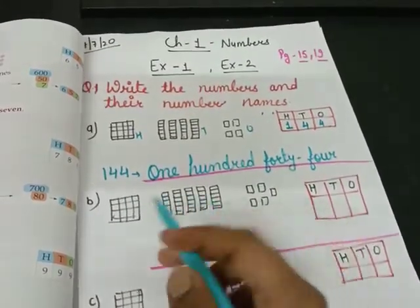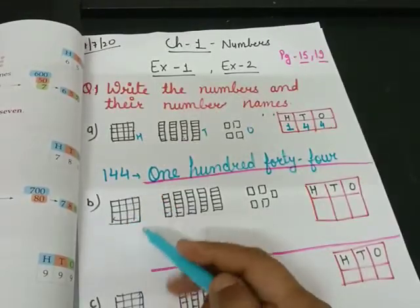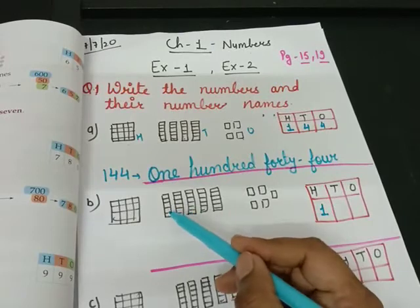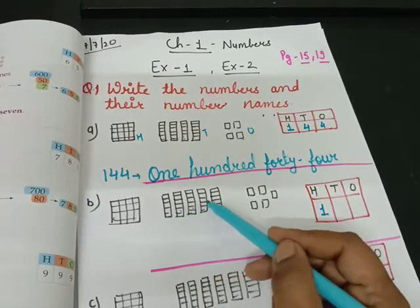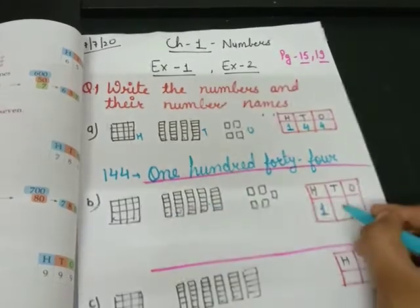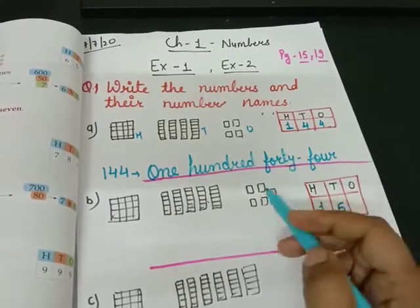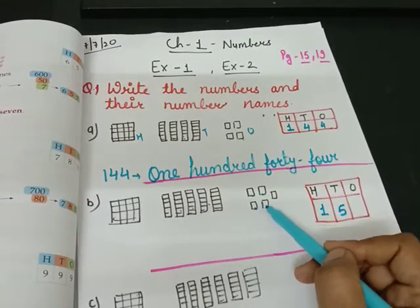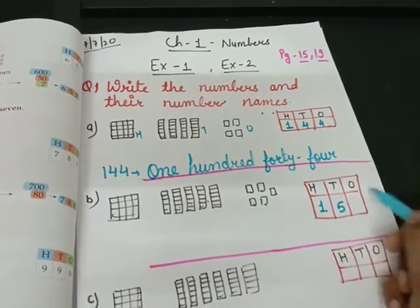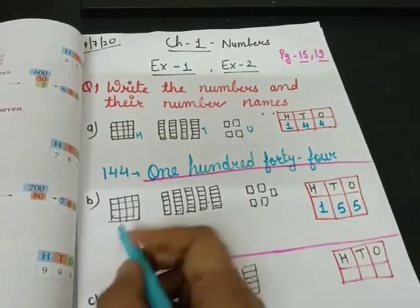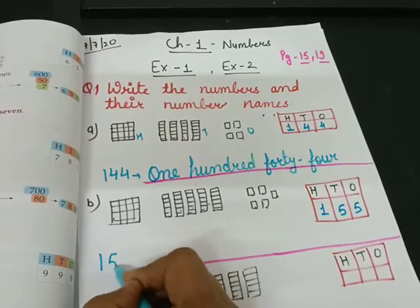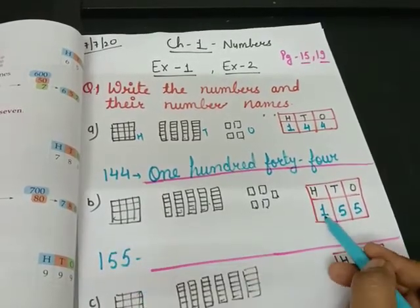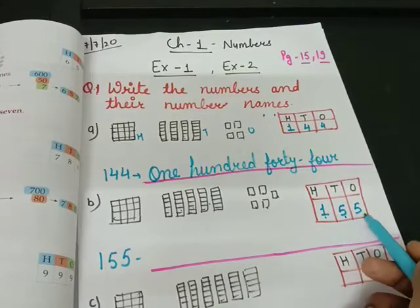Now second. How many hundreds are there? One. How many tens are there? One, two, three, four, five. And how many ones are there? One, two, three, four, five. Again write this number. What can we write? One hundred fifty-five.